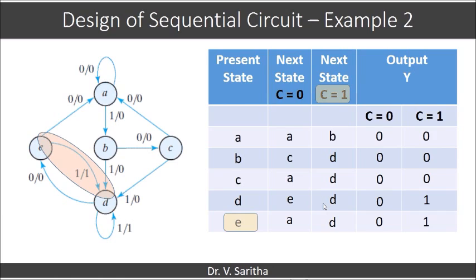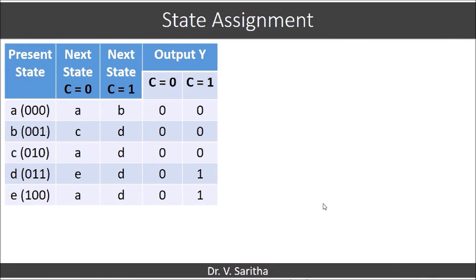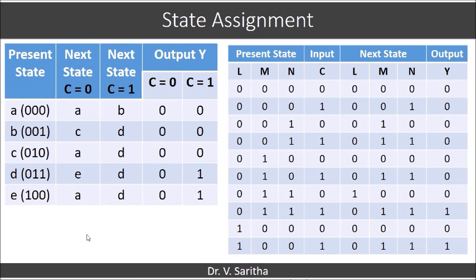So let us go for the next step, that is state assignment. In the case of state assignment, I am assigning the value 0 to A, 1 to B, 2 to C, 3 to D, and 4 to E. These binary values should be replaced in place of alphabets in the state table.